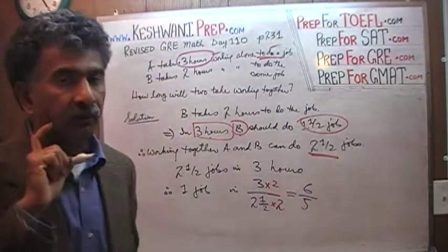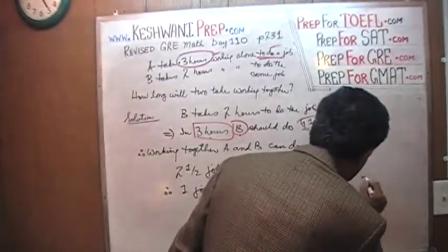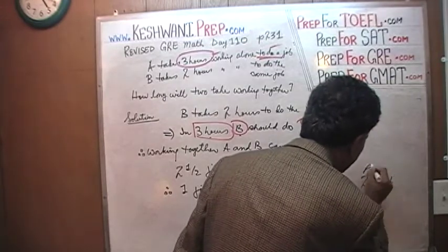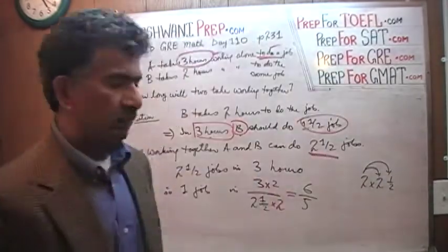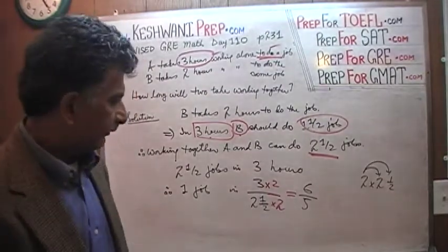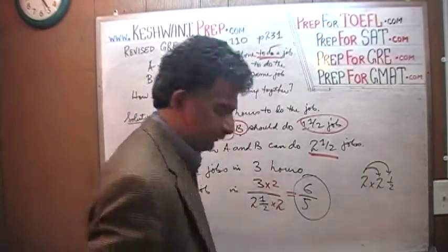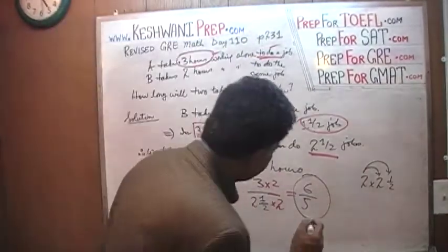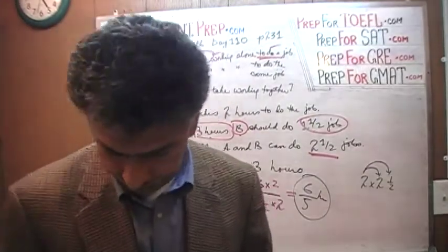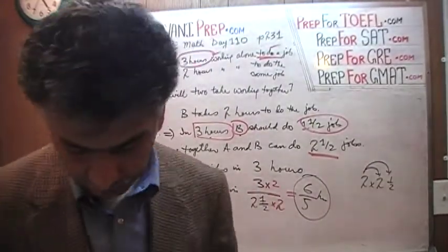Two times two and a half is the same as two times two plus two times one-half — that's four plus one, which is five. And three times two is six. So the answer is six fifths of an hour.